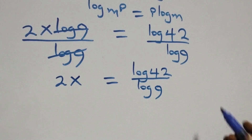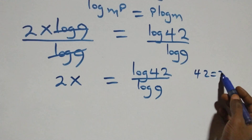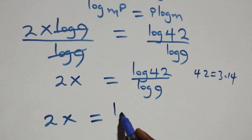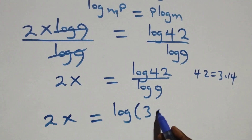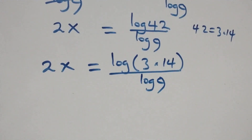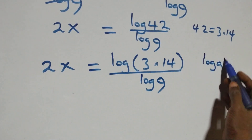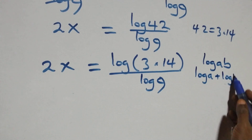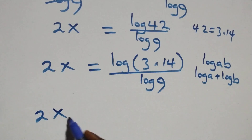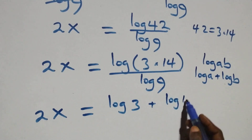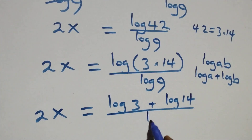Then from here, we can express 42 as 3 times 14. What we have here becomes 2x equals log of 3 times 14, over log 9. We then apply the law of logarithms: when we have log a times b, it's the same thing as log a plus log b. So what we have becomes 2x equals log 3 plus log 14, all over log 9.